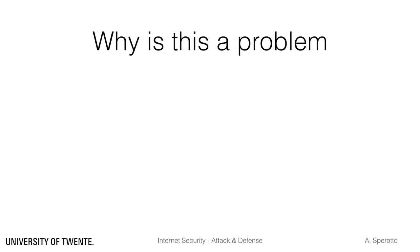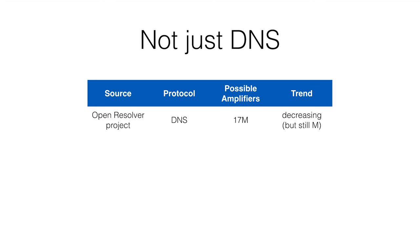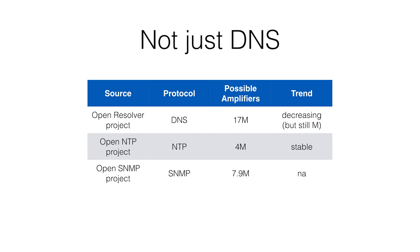We now know how reflection and amplification attacks work and that they can achieve high amplification factors by misusing regular protocols. But is this really a problem? Actually it is, and it has to do both with the amplification factor as well as with the number of possible amplifiers on the internet. An open DNS resolver answers queries from any source IP, not only hosts from the same network. In June 2016, the Open DNS project reported around 17 million open DNS resolvers. Although there is a decreasing trend, the actual number of possible amplifiers is still extremely high. The number of open NTP servers is typically around 4 million, and the number of open SNMP servers is around 7.9 million — and those are only protocols for which we have some indicative statistics.